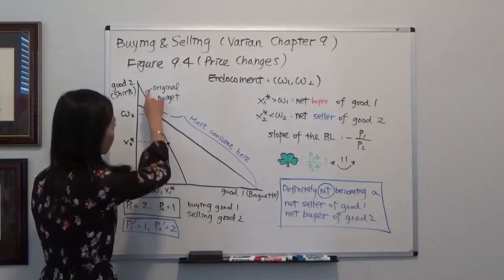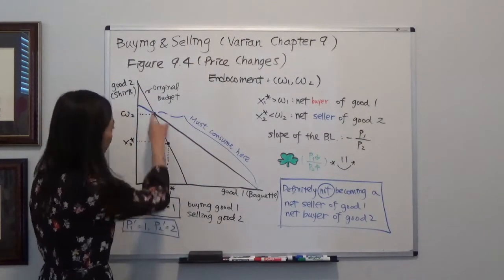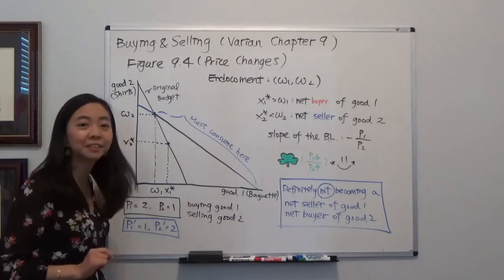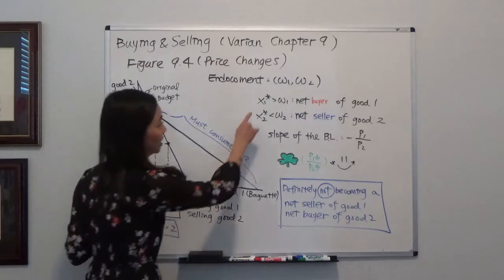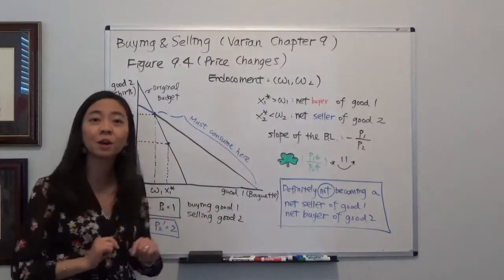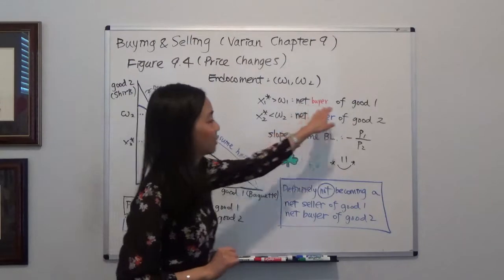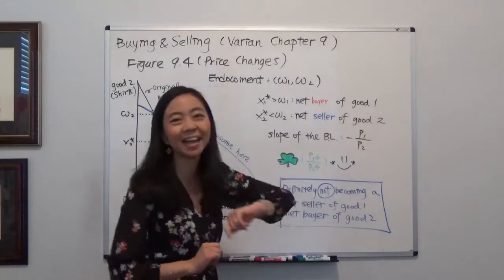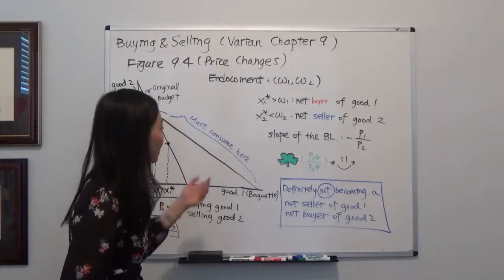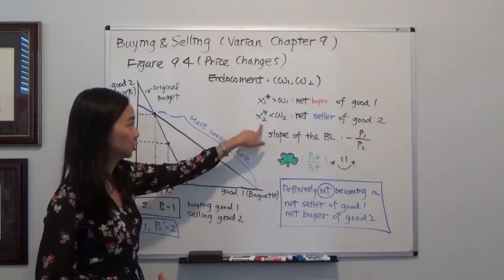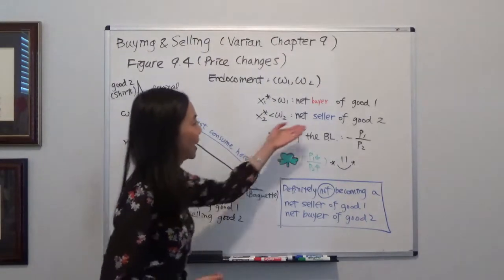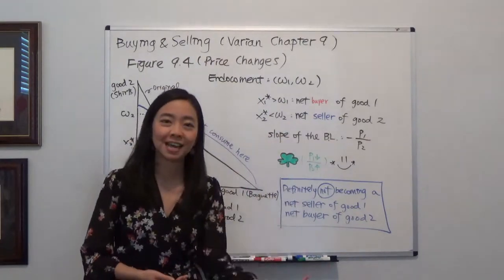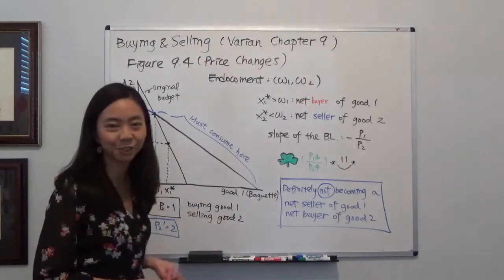This is your initial budget line and it goes through your initial endowment. And because your final consumption x1 star is higher than your Omega 1, that means you're a net buyer of good one. That's your baguette. You're buying more baguettes. And your final consumption x2 star is less than your Omega. That means you're a net seller of good two. You're selling your t-shirts.